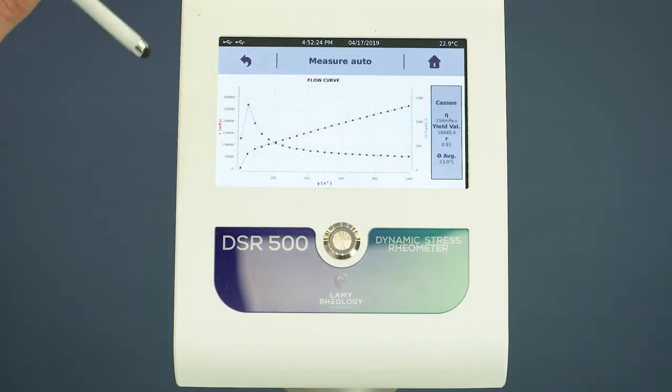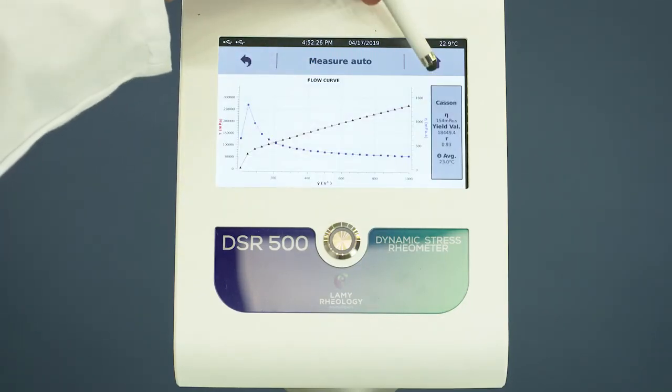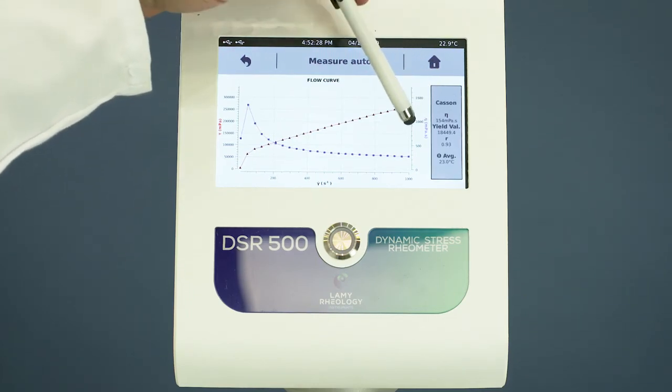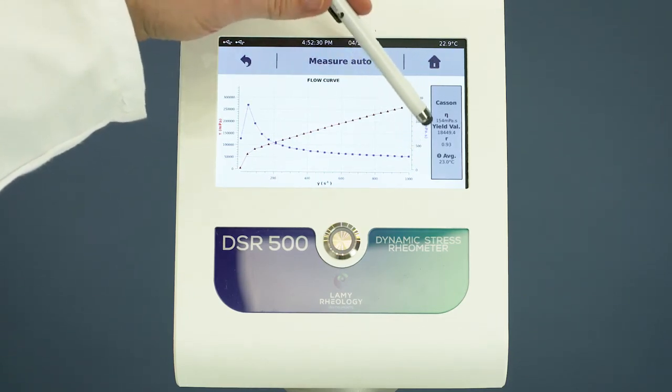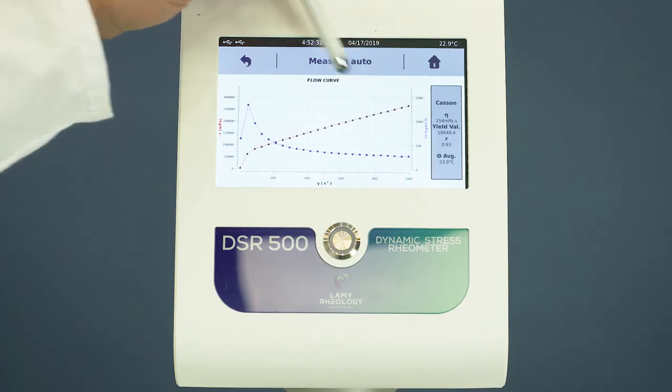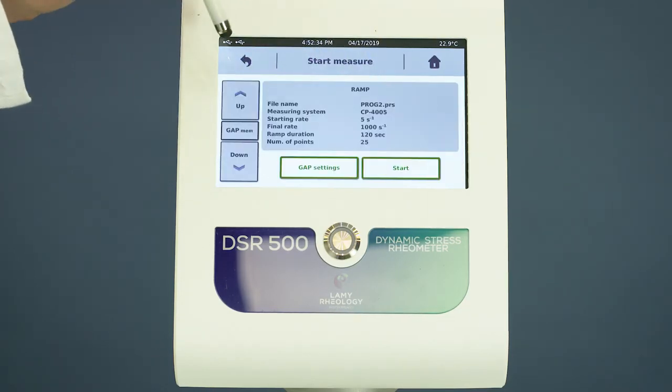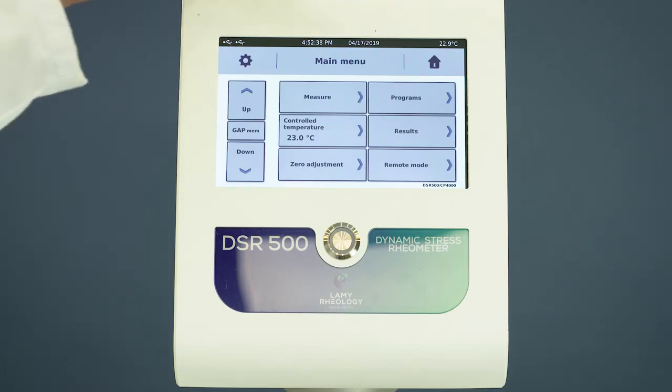Save the measuring file at the end and see the analysis result. A report can be printed directly. Go to the main menu to edit the saved file.